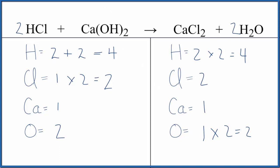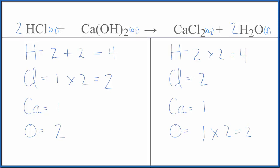If you want to write the states, they look like this. It's Dr. B with the balanced equation for HCl plus Ca(OH)₂. The type of reaction is neutralization — it's also a double displacement reaction. Thanks for watching.